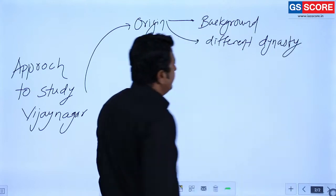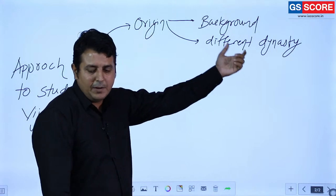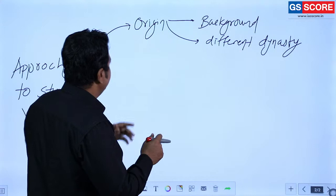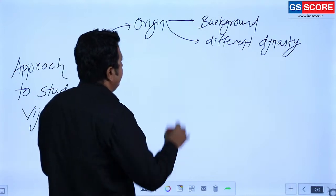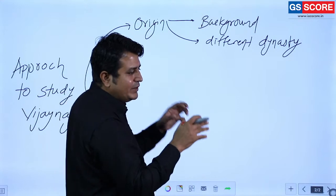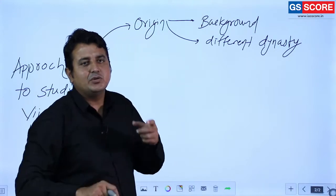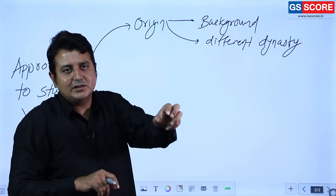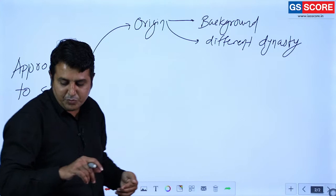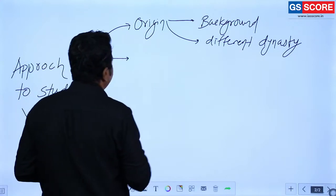So we have to discuss the background and origin, the different dynasties, and one more important thing to mention in the background is the Delhi Sultanate and the weakening of Delhi Sultanate in the southern area - that is a most important factor.